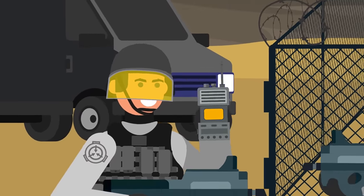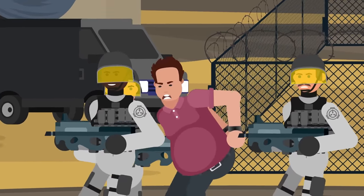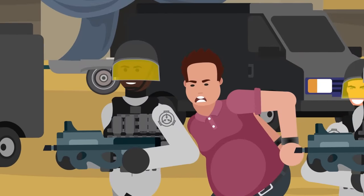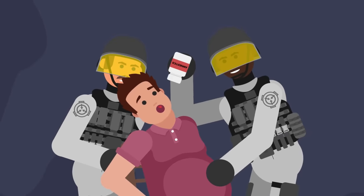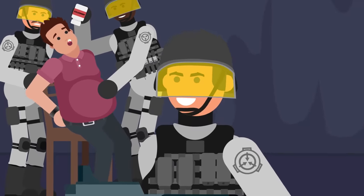They would be taken into custody, interrogated, and, as long as they were unaware of SCP-1437's anomalous properties, given a healthy dose of amnestics and released back into the general public.